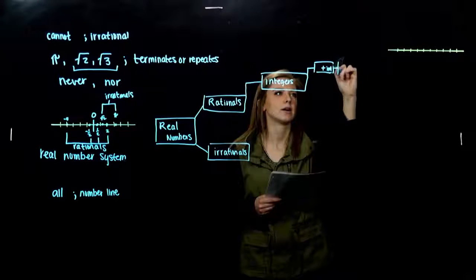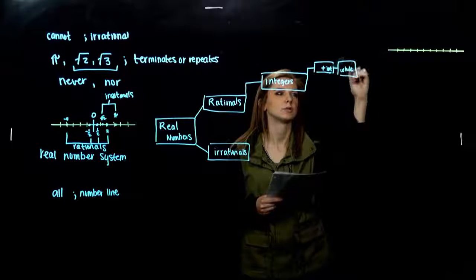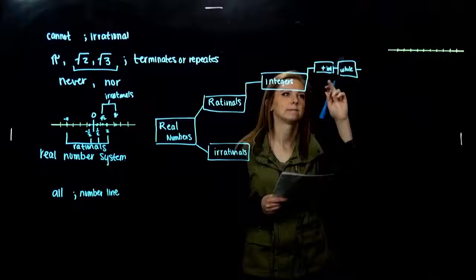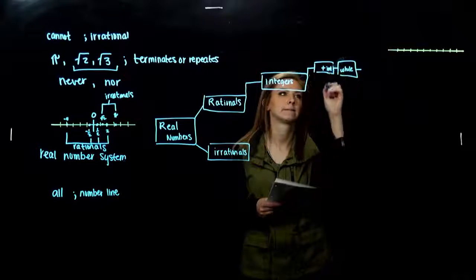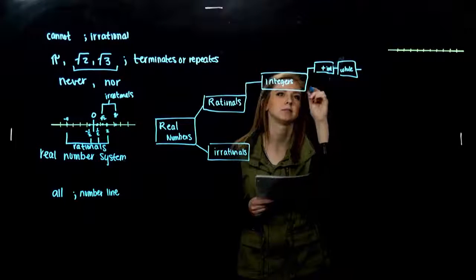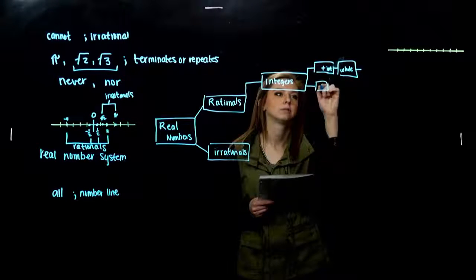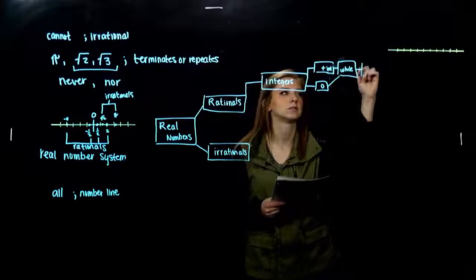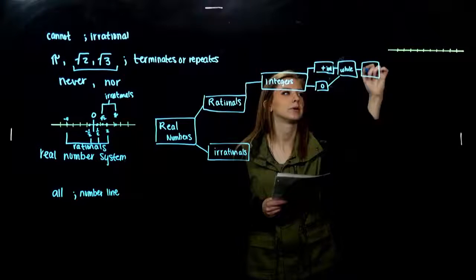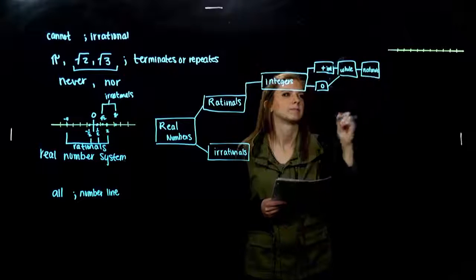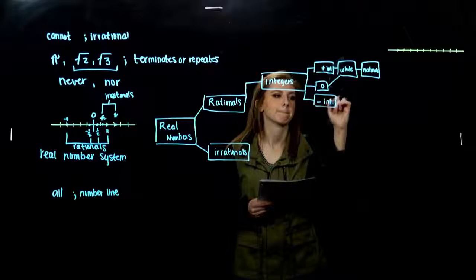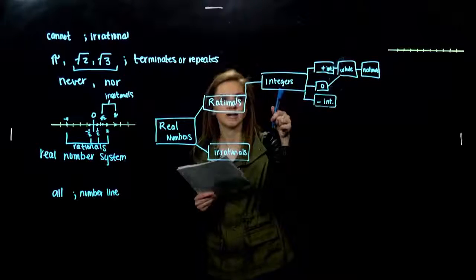Inside the positive integers, I also have the whole numbers, which include zero. Technically, the positive integers and zero together form a subset — the wholes. And inside of the whole numbers, we have the counting numbers, which are the naturals. We also have the negative integers. So those are our integers.